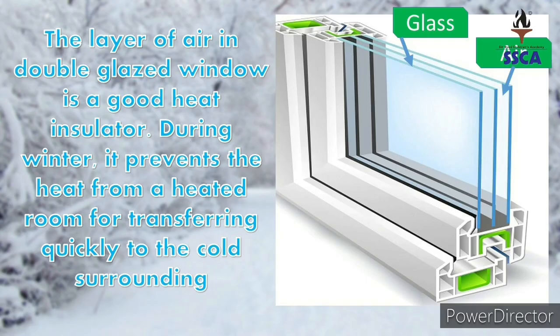The layer of air in a double glazed window is a good heat insulator. As you can see in the picture, the double layers each have a layer of air, and this air layer does not allow heat to pass through it. During winter, it prevents heat from a heated room from transferring quickly to the cold surroundings outside, keeping the room's warmth inside.